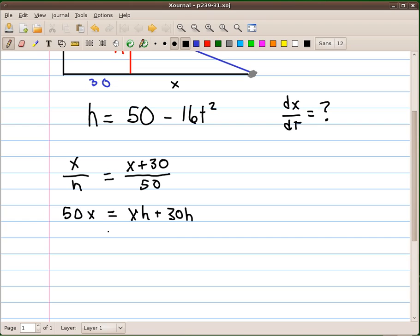Subtracting xh to the other side and then factoring out an x, I get x times 50 minus h equals 30h. And I'm going to divide by 50 minus h. So, the expression for x in terms of h is 30h over 50 minus h.